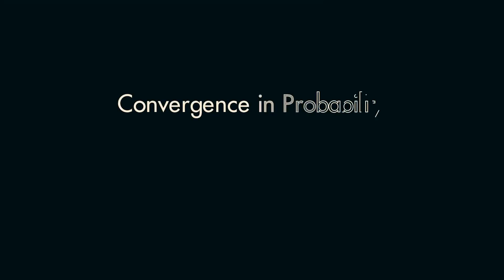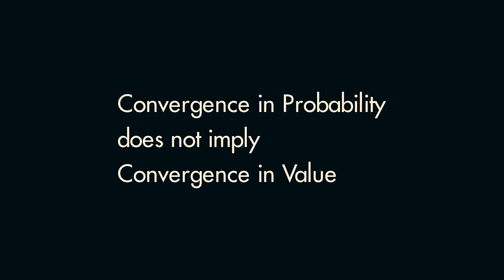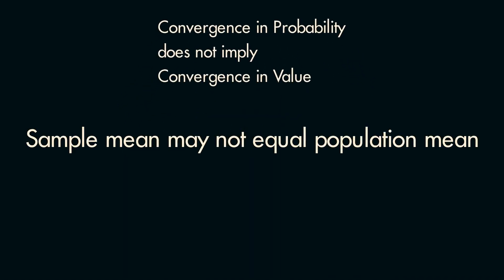The important distinction to make is that convergence in probability does not necessarily imply convergence to the actual value. So even with an infinite number of samples, there is an infinitesimally small chance that the sample mean and the population mean are different.